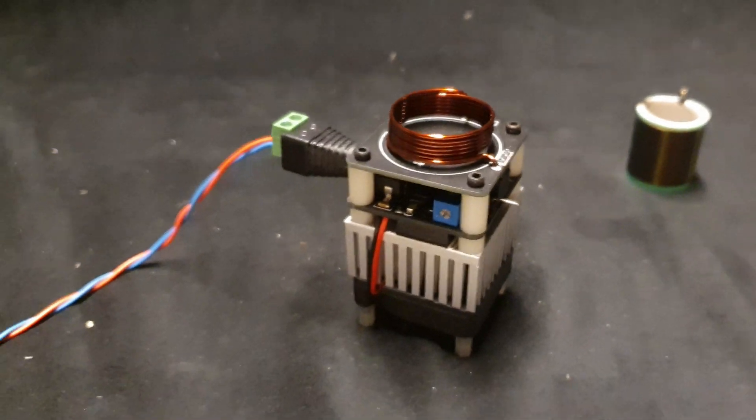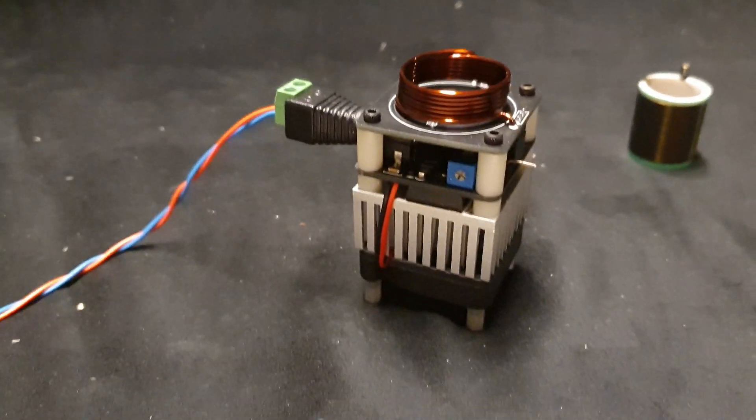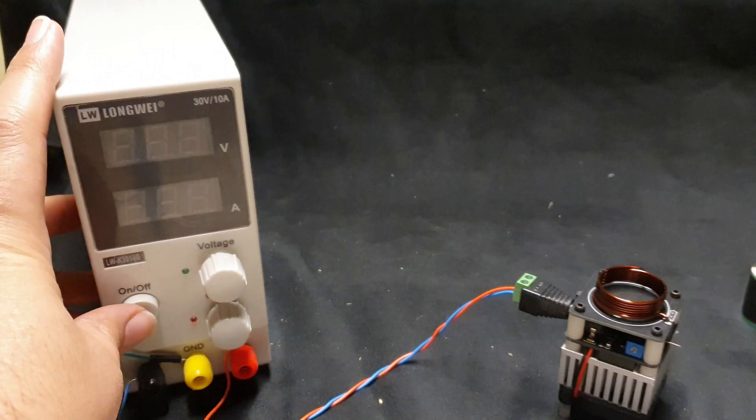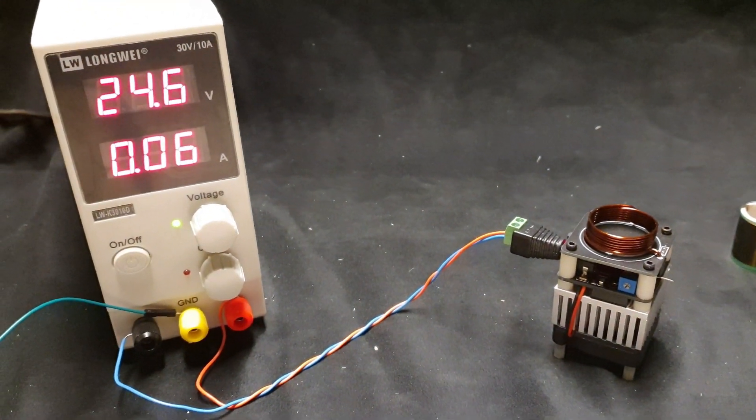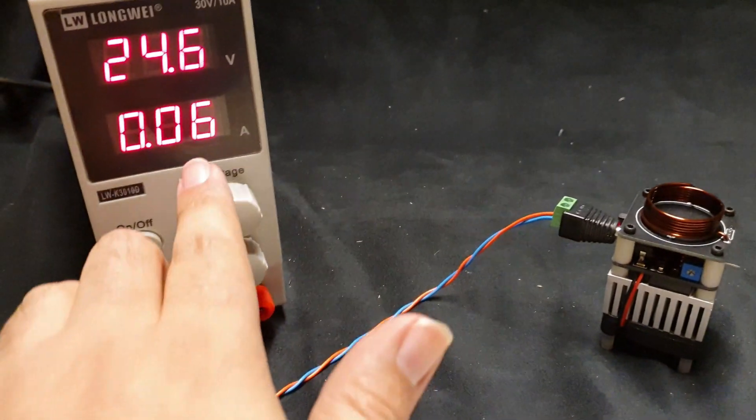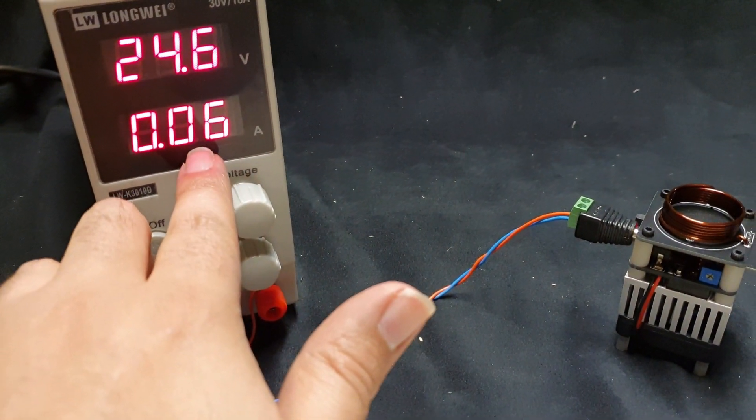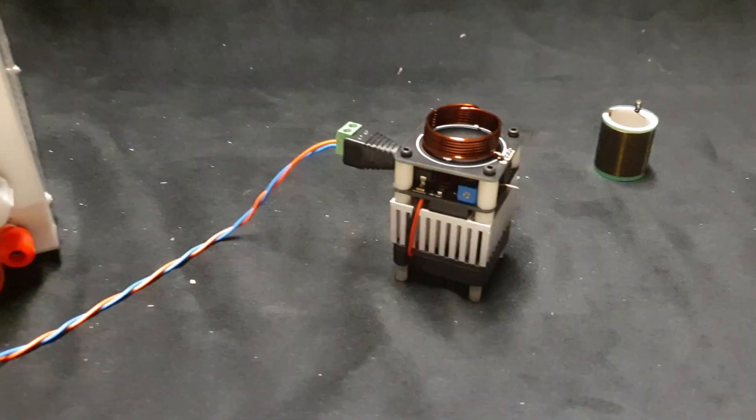So one common problem that I've been hearing about is that when you power on the coil, it doesn't really power up. You're only getting this 0.06 amps, getting a small current.